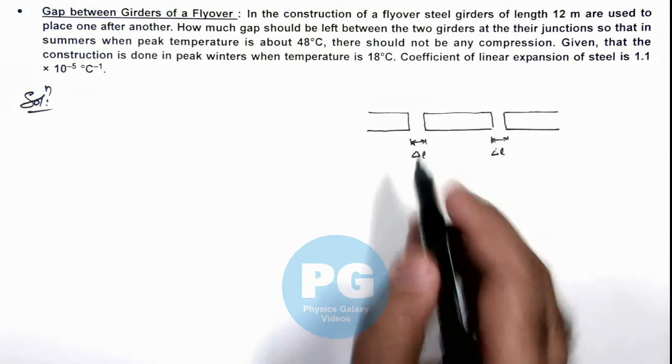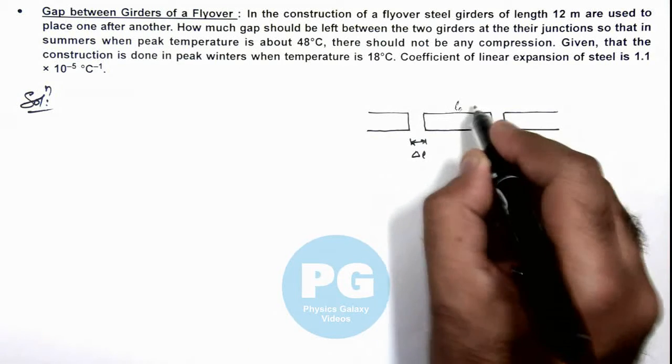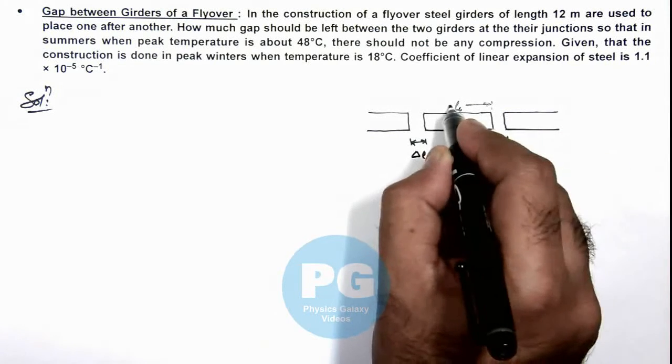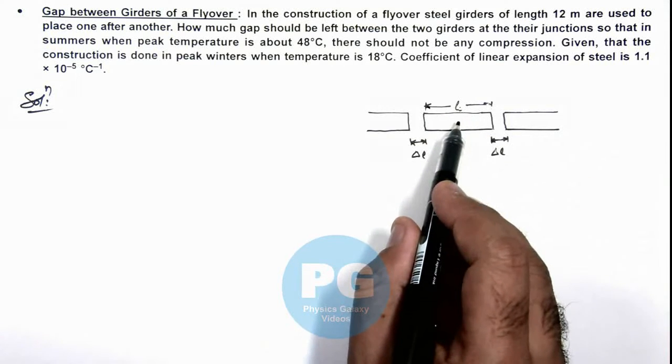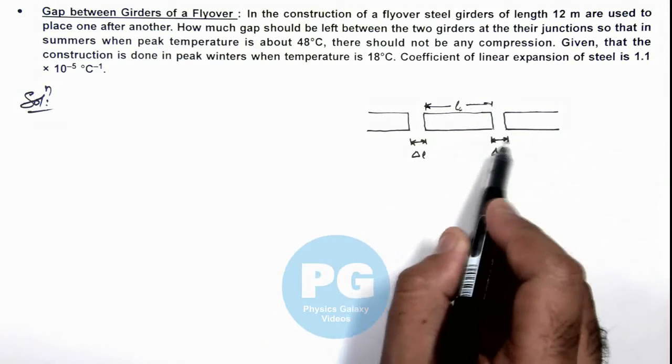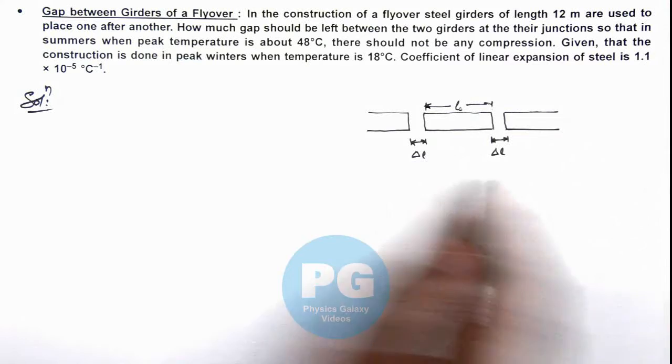So we can say, if the girder's length is L₀, then on increasing their temperature, the maximum expansion in each girder should not exceed this delta L.